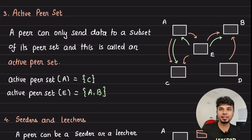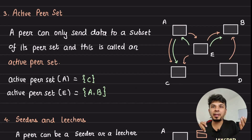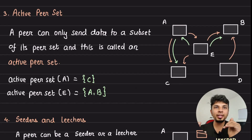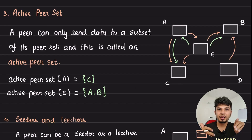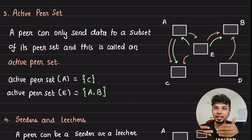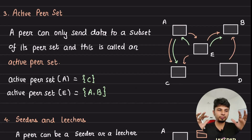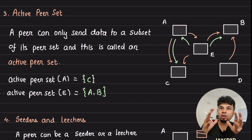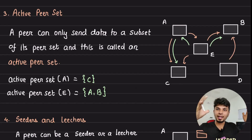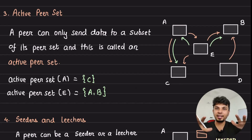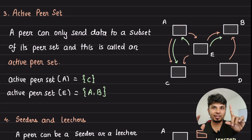Third is the active peer set. Although you might get 50 peers from the tracker, you will not be connecting to all 50 at once — only some of them. So the active peer set is a subset of the peer set which you can send data to or receive data from, where you are actively transferring the file. To keep a check on overall network traffic, you might have a 50-node peer set but your active peer set might only be 10, meaning you are actively connecting to just 10 peers to download or upload a particular file.